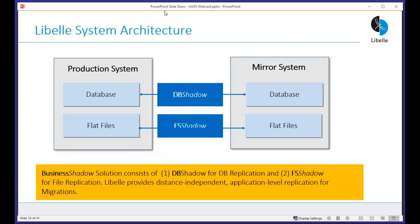What we offer is a combination of software called DB Shadow and FS Shadow, combined in a solution called Business Shadow, with a service concept wrapped around it where we work with customers on planning, building, and implementing the migration. This is focused on a homogeneous migration — after which you do export/import for re-platforming. DB Shadow replicates databases based on database log files. We have versions for Oracle, HANA, MS SQL Server, Sybase, and all SAP-supported platforms. FS Shadow replicates files — sub-mount directories, interface data, any SAP-related files.